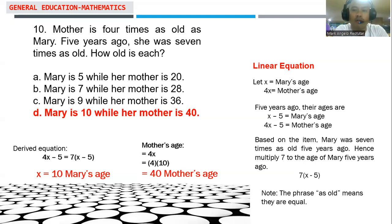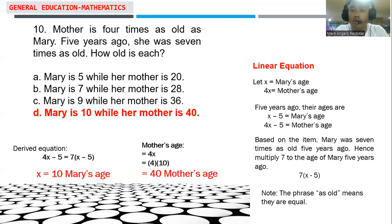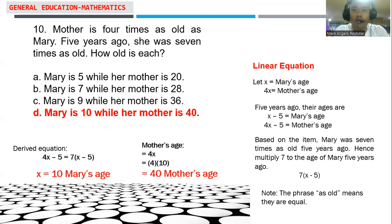Computing the value of x from the equation 4x minus 5 equals 7(x minus 5), we get x equal to 10. This represents Mary's age. Multiplying by 4 gives the mother's age of 40. So this item is an application of an age-related problem in linear equation, and the answer is D: Mary is 10, mother is 40.